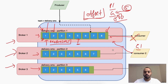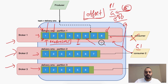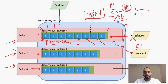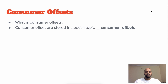We should have already stored offset 5 here. So whenever a consumer is reading from a partition, it can store this offset. Let's say it has read message 6, then it stores that offset; it has read message 7, it stores the offset. This way, if it goes down, the next consumer will come and know from where to start reading the messages.